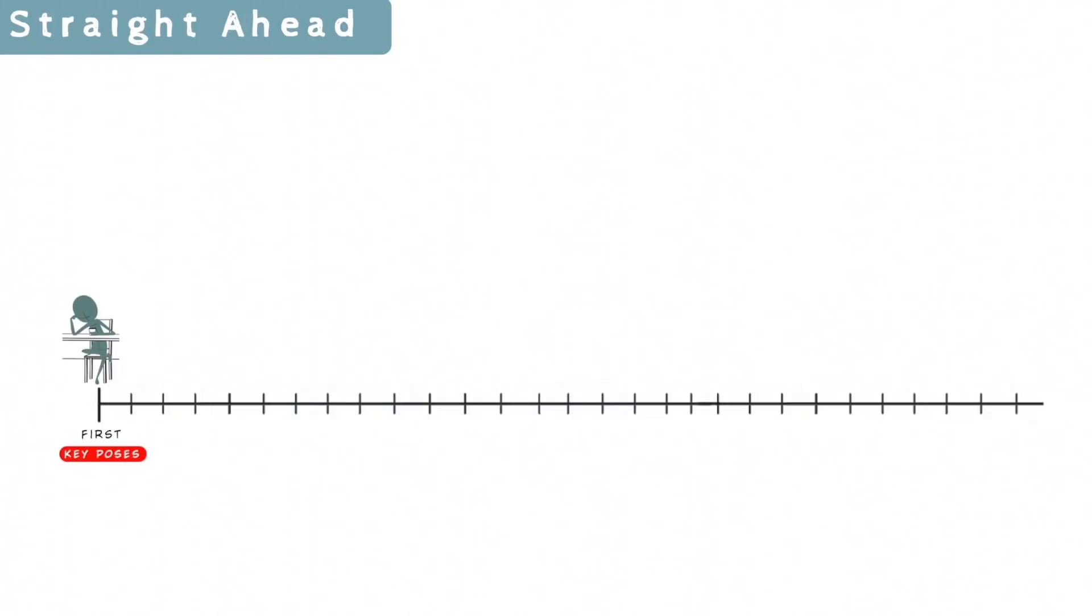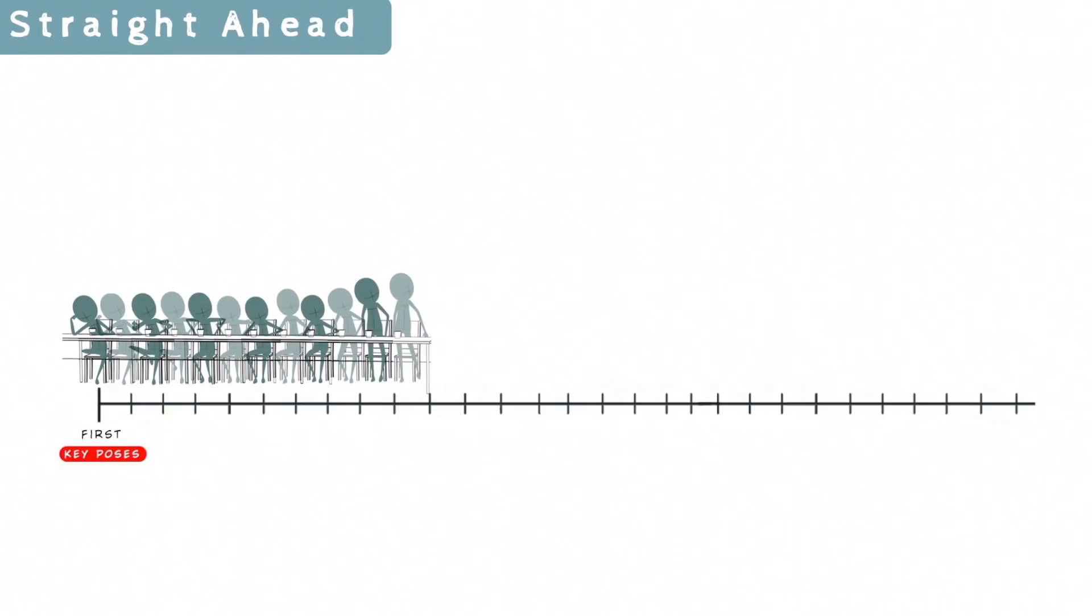As I said before, in straight ahead, we start from the first key pose, and we proceed with all the other poses, key poses and breakdowns, following the sequence order. So when we do this, we add as many keys as we want, just following our instinct.